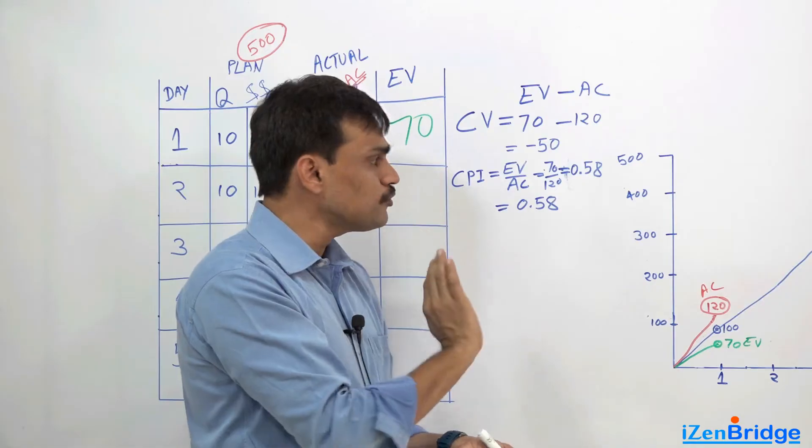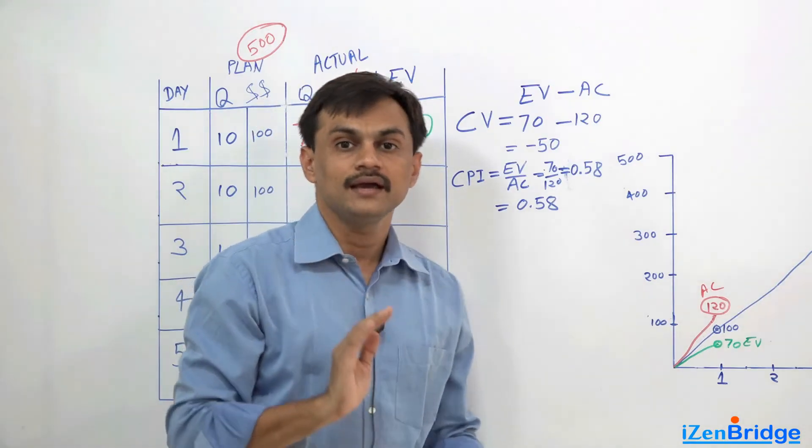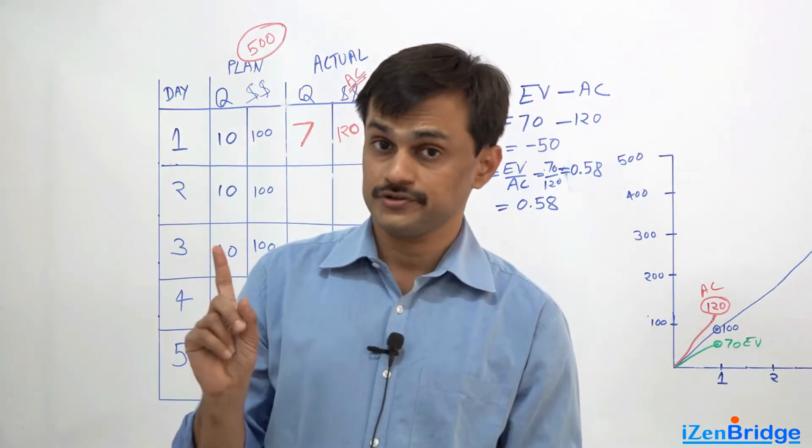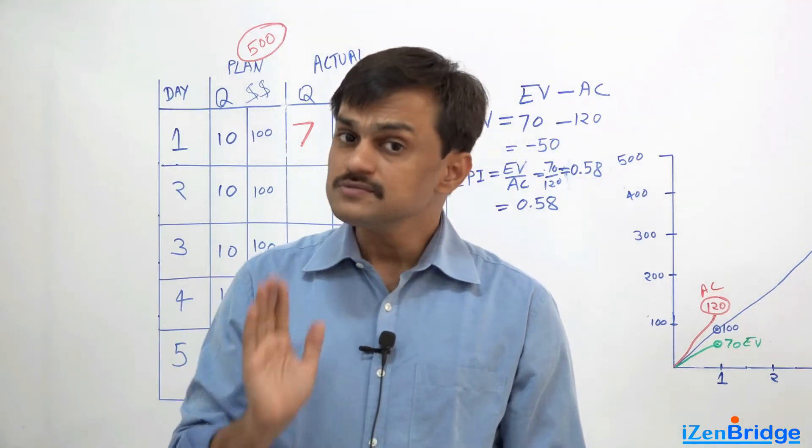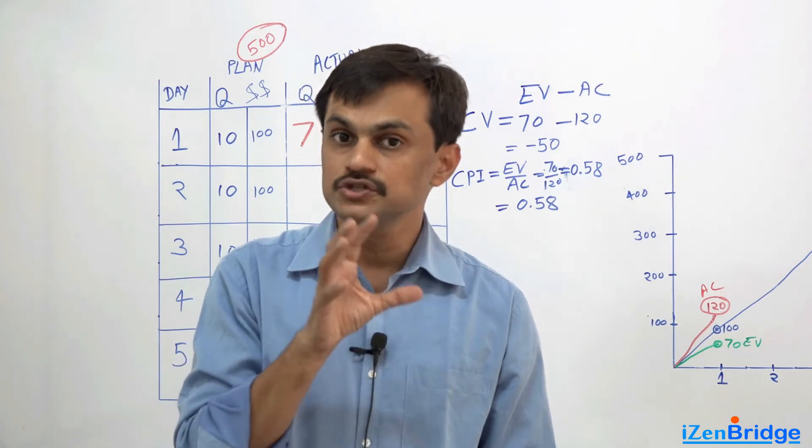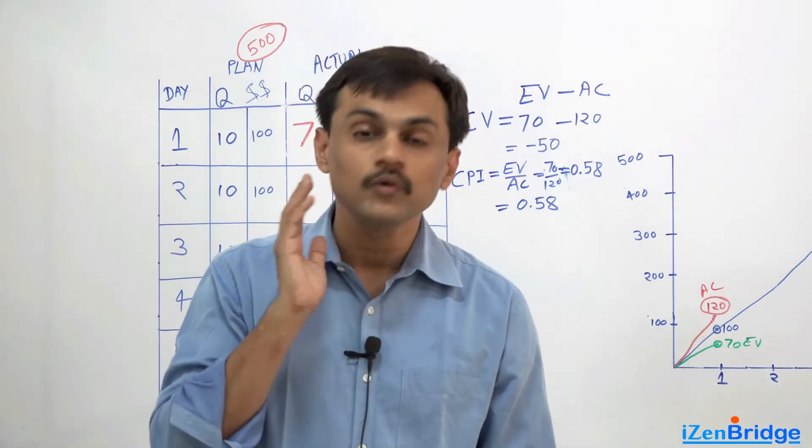So anything, if our cost performance index is less than 1, it shows inefficient utilization of our money as per budget. And if it is more than 1, it shows that we are doing far better as far as using our money than our budget.